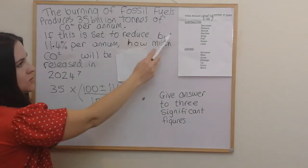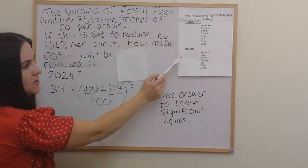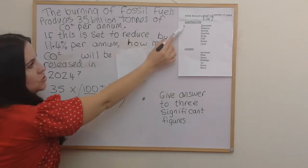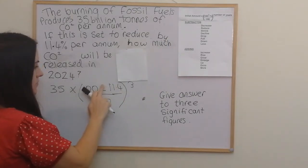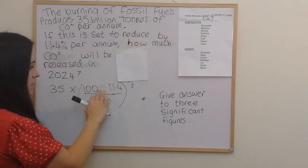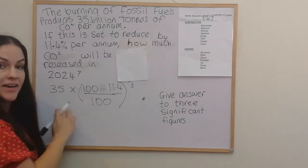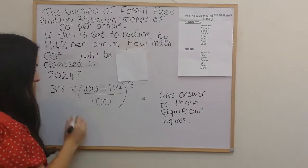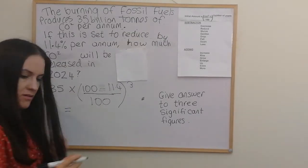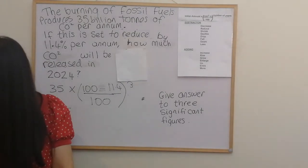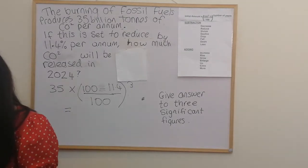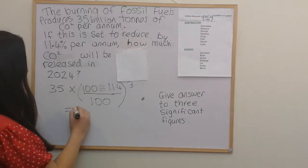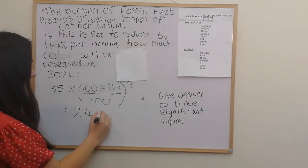We have to consider whether it's an addition or a subtraction. This one says 'reduce', so reduce is a subtraction. You can put it into your calculator: 35 times (100 minus 11.4) over 100, to the power of three. The answer we get is 24.34.